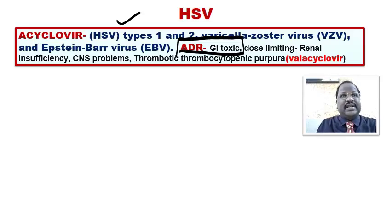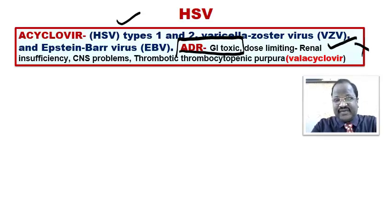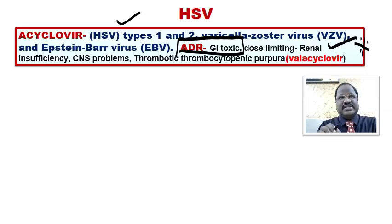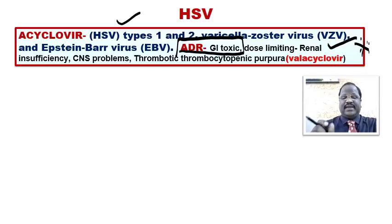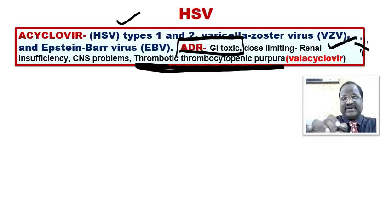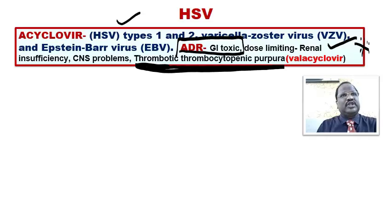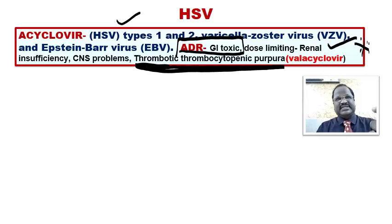The dose-limiting toxicity is nephrotoxicity, causing renal insufficiency. This is very important because acyclovir totally undergoes excretion through the kidney only. It may also rarely cause some CNS problems. Valacyclovir may cause one serious problem called thrombotic thrombocytopenic purpura. So the most common drug useful for herpes simplex is acyclovir, and for oral use the best option is valacyclovir.